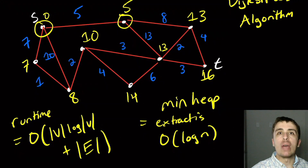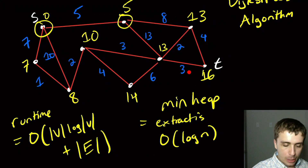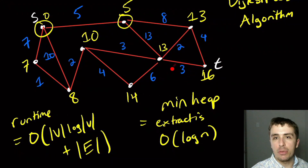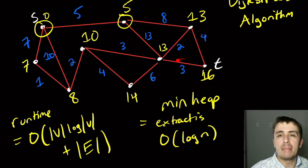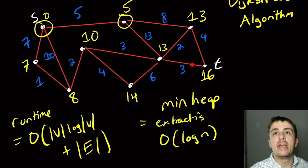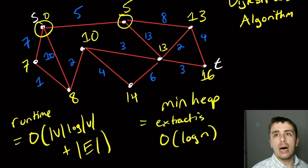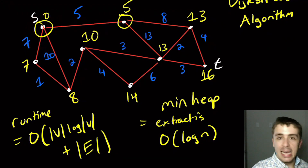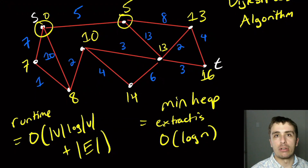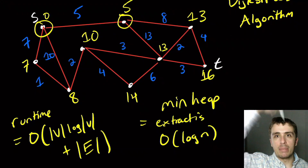A question for thought: try to make this work with negative weights and figure out when Dijkstra's algorithm can still run with negative weights. For example, making this edge negative three might still work — but making the three and the four both negative would not. Try to think about what you actually need for a graph to not work with Dijkstra's, and try to come up with a way to solve the shortest path problem from s to t including those cases where Dijkstra's algorithm does not work.